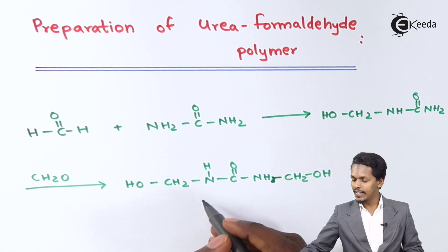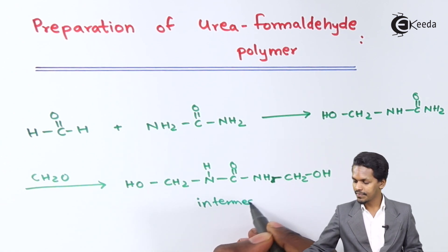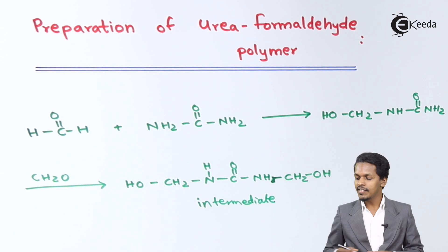So therefore this is the intermediate that we have got. And suppose if this intermediate is further treated with formaldehyde, the product that we could get is: